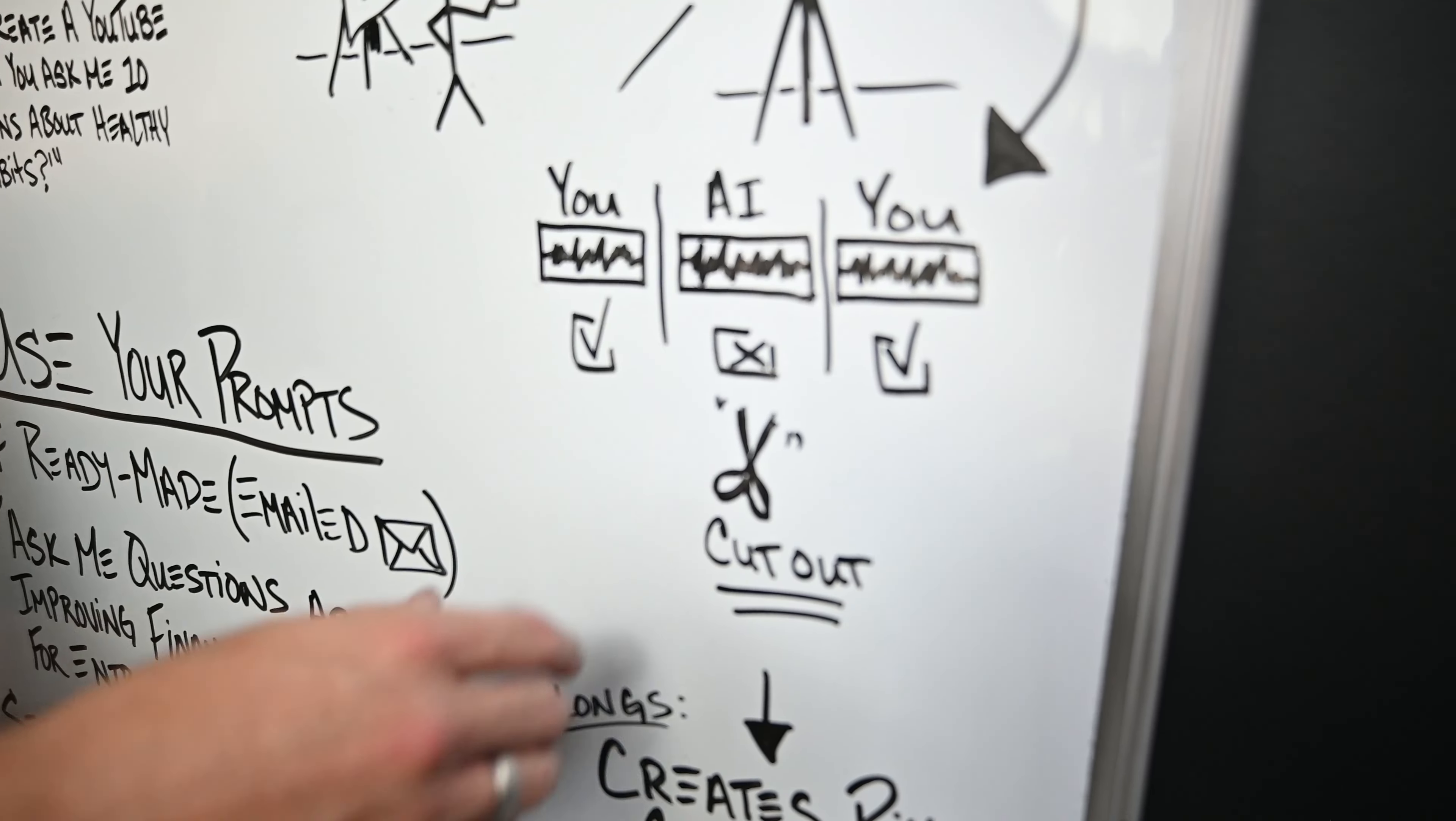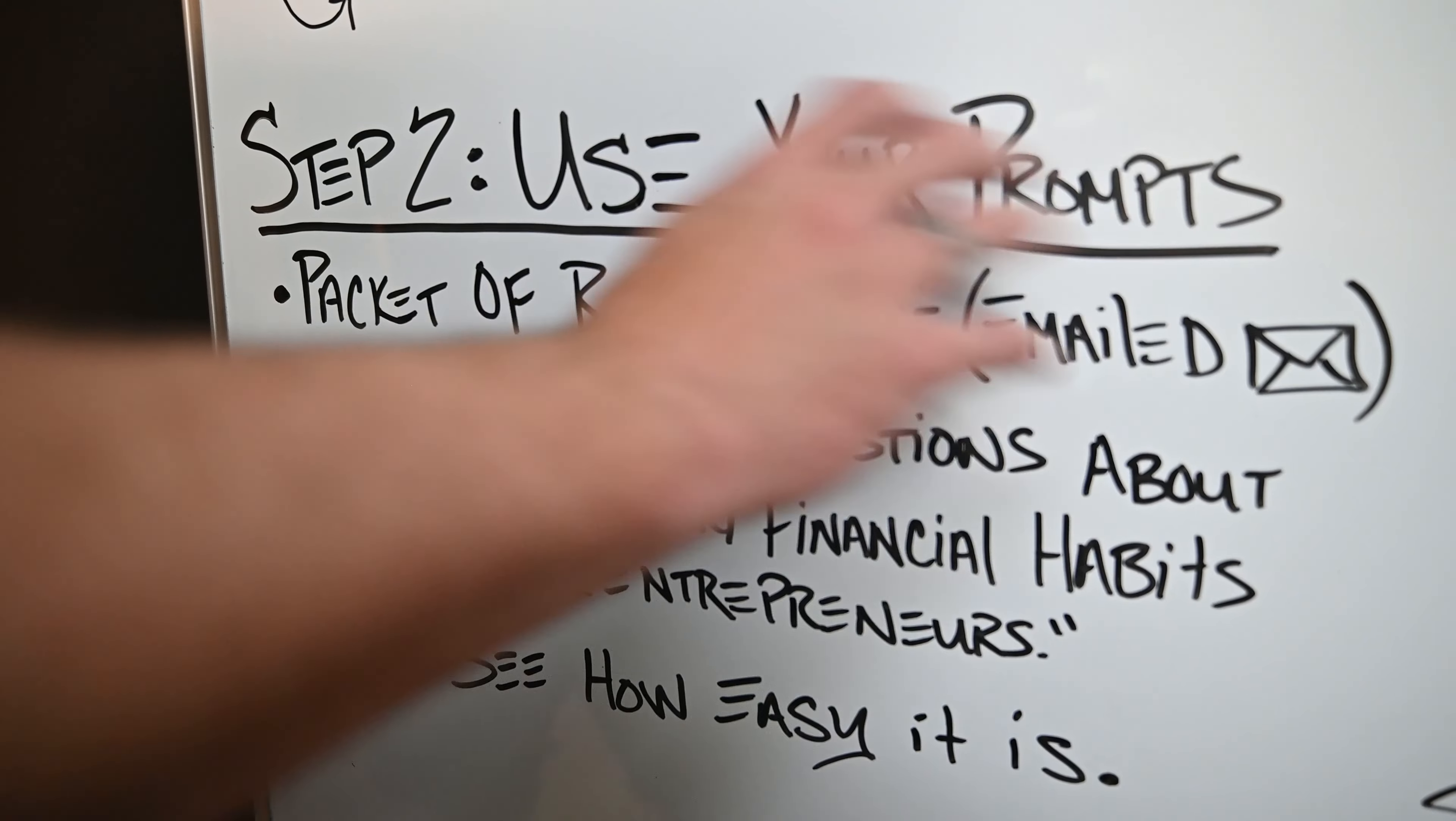You could say, hey ChatGPT, I help people create courses and sell courses, and I help them do marketing and emails and everything like that. This piece of content that I want to create, I want you to ask me these questions about this particular topic so that I can create a YouTube video. It'll do that—it'll literally start talking to you, but you have to press this button right here and it'll instantly start talking to you.